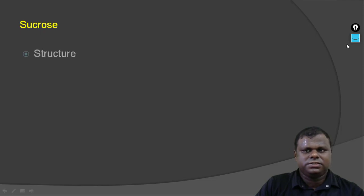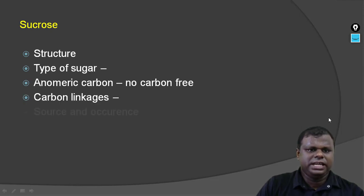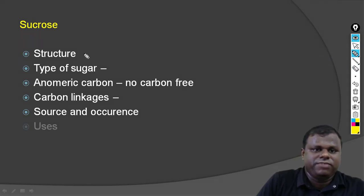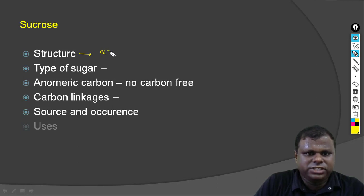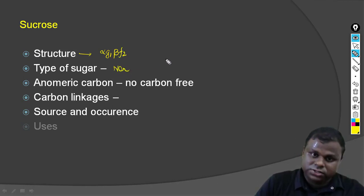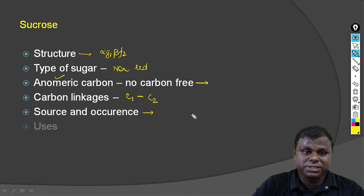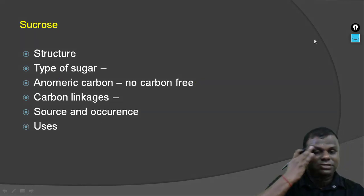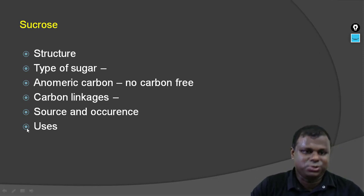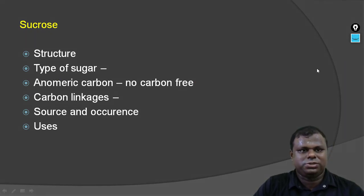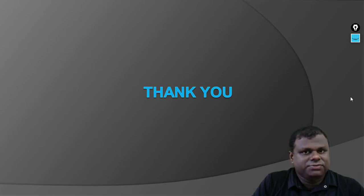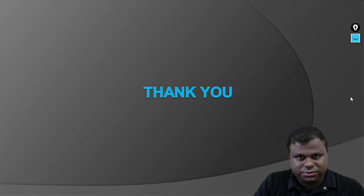Now sucrose — let's see certain details. Structure: it's alpha-G1 beta-F2. Type of sugar: non-reducing. No anomeric carbon is free. Carbon linkages: C1 and C2. Source and occurrence: sugarcane is basically the source. Use: it is normally used for household purposes. This was all about the structure of sucrose. I hope all of you were able to understand this video very well. Thank you very much for watching the video, and see you in the next one.